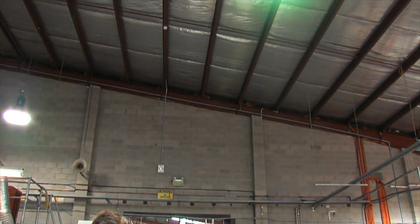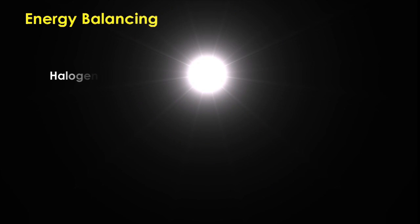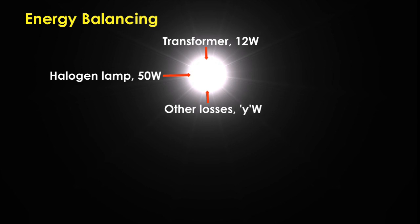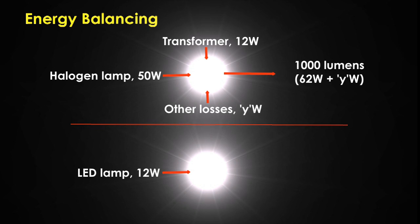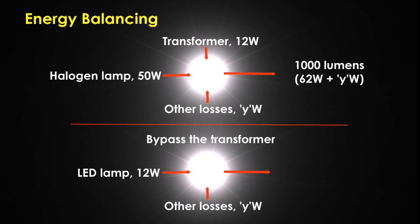There are various levels of complexity with energy balancing. A simple example is to look at a halogen light and consider the lamp power it's using — with most halogens it's 50 watts. Then you've got the transformer, which uses about 12 watts, plus wiring losses back to the circuit. If I change that over to an LED lamp using only 8 to 12 watts and bypass the transformer completely, I've already made a big saving.